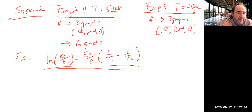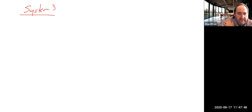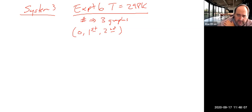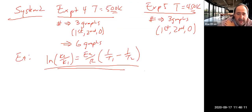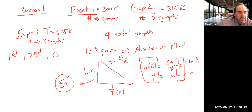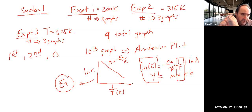For System 3 you have one table — Experiment 6 at a temperature of 298 K. For that table you're going to make three graphs: zero order, first order, and second order. So quickly counting: three graphs for System 3, six graphs for System 2, nine plus one for System 1 — that's something like 19 graphs total. Years ago you used to make 30, plus you had to do the experiment in person, so it's a lot less than it used to be.